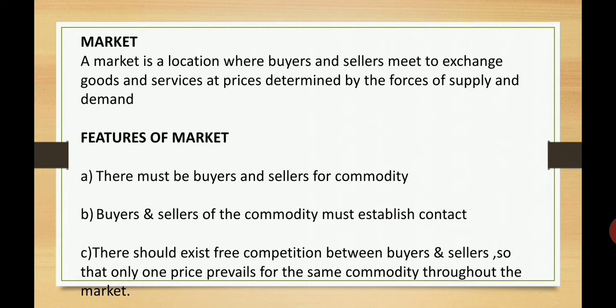Next are the features of market. There must be buyers and sellers for the commodity. Buyers and sellers of the commodity must establish contact with each other. There should exist free competition between buyers and sellers so that only one price prevails for the same commodity throughout the market.